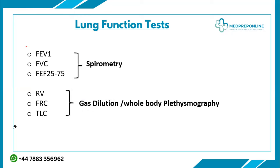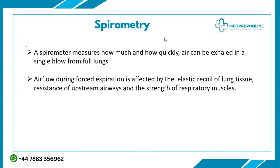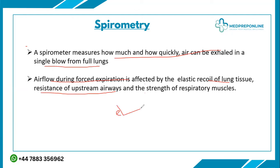Spirometry is a measure of how much and how quickly air can be exhaled in a single blow from the lungs. Airflow during forced expiration is affected by the elastic recoil of lung tissue, resistance of the airways, and the strength of the respiratory muscles. Essentially, elasticity and compliance of the lungs determine whether there is an obstructive or restrictive pattern.